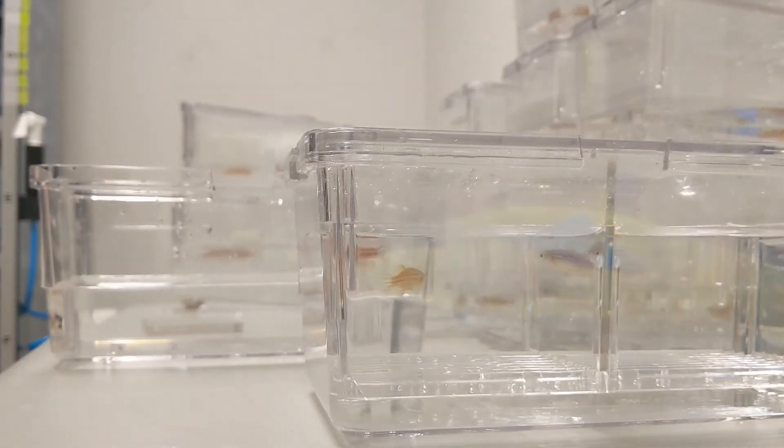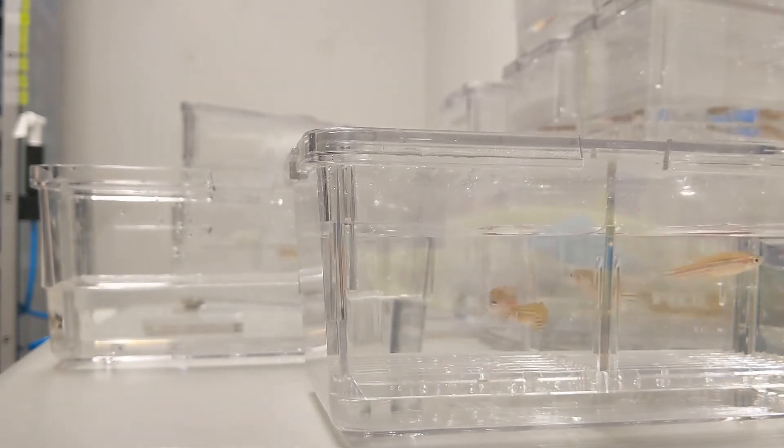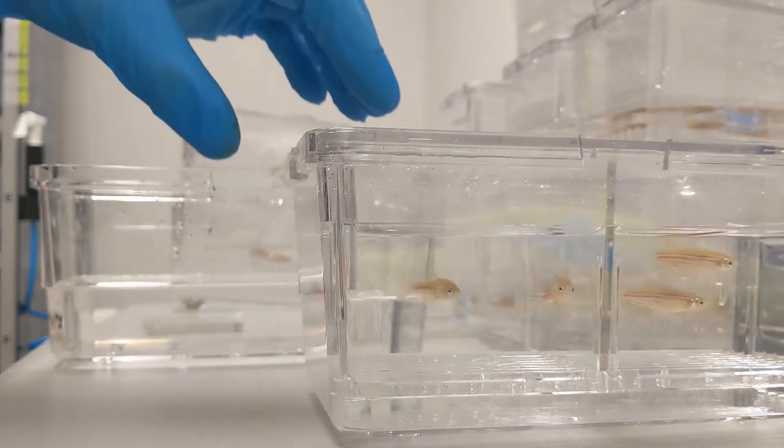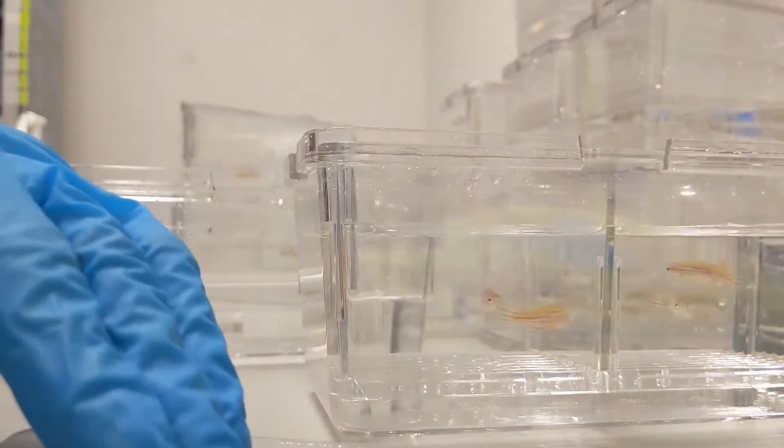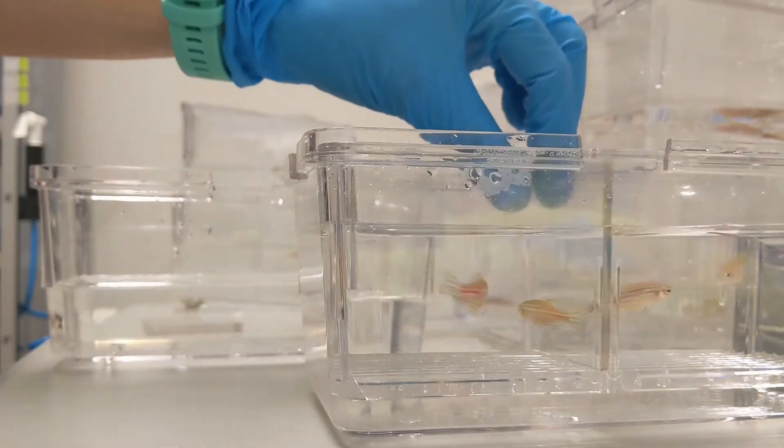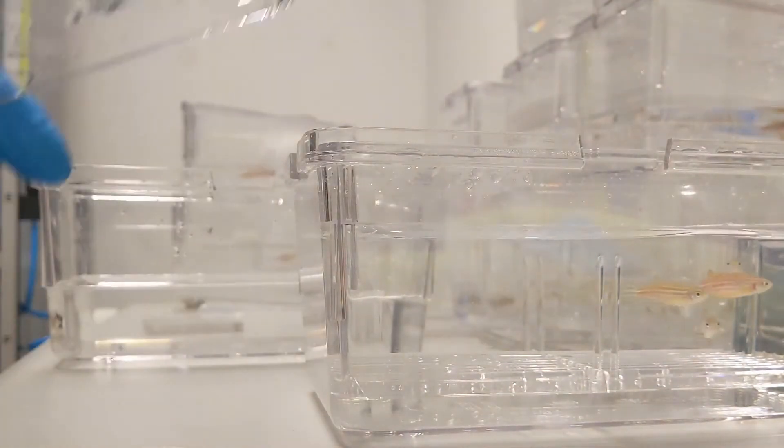We set up breeding pairs the night before crossing them. The crossing cages have a divider dividing the males and the females, and a grate on the bottom that the embryos can fall through. This prevents the embryos from being eaten by the parents.